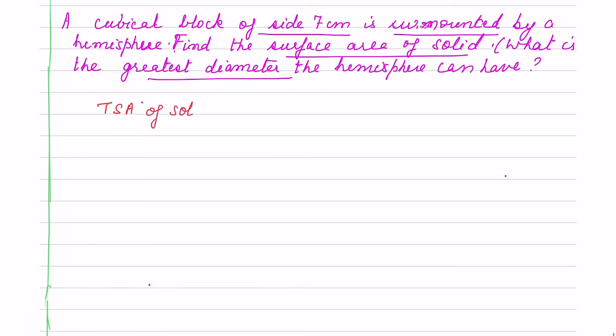When we solve the question, we take the TSA of solid will be TSA of cube, that is 6 into side square, side is 7 centimeter, then we have the removing part area, that is π into r square, r is 3.5 plus we add area.